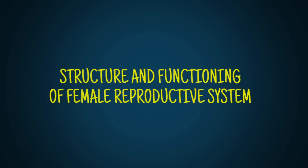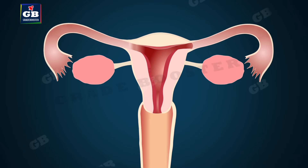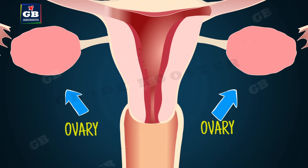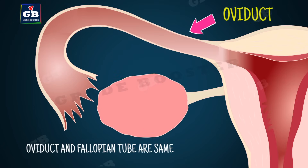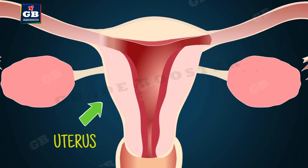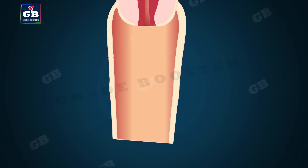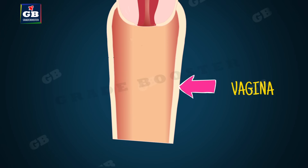Human female reproductive system: The different parts include ovaries — a pair of ovaries that contain premature egg cells; oviducts — two oviducts which unite into an elastic bag-like structure known as the uterus. The uterus is called the womb, where implantation and development of the baby takes place. The cervix connects the uterus to the vagina, and the vagina is the passage where sperms are deposited during sexual intercourse.